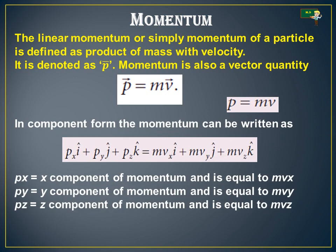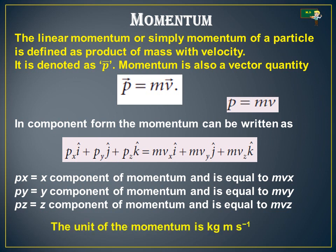The component form of momentum can be written as: p-x i-cap plus p-y j-cap plus p-z k-cap, which equals m·v-x i-cap plus m·v-y j-cap plus m·v-z k-cap. Here, p-x is the x-component of momentum and equals m·v-x; p-y is the y-component and equals m·v-y; p-z is the z-component and equals m·v-z. The unit of momentum is kg·m·s⁻¹.